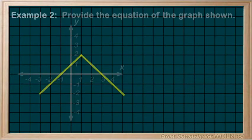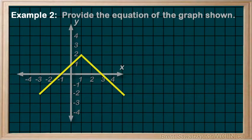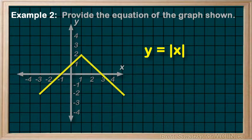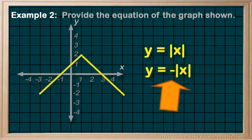Example 2: Provide the equation of the graph shown. In this case, we look at the graph and we recognize that it's an absolute relation. So let's start with our base absolute equation, y equals the absolute of x. Let's recognize that it's reflected vertically, so we'll put a negative out front here.